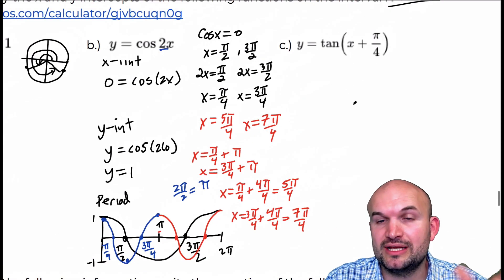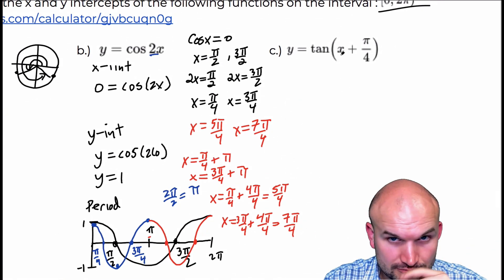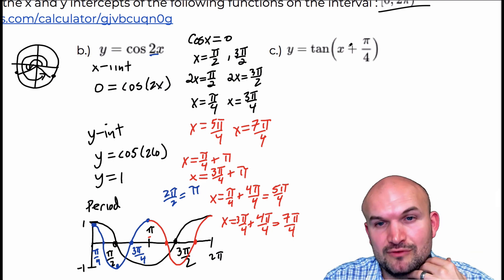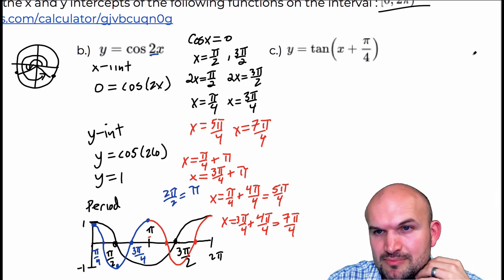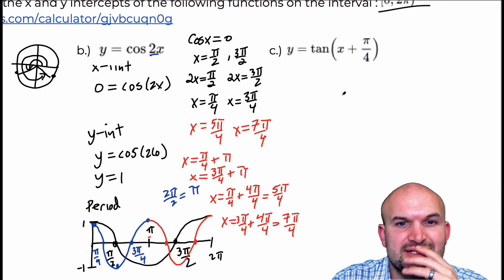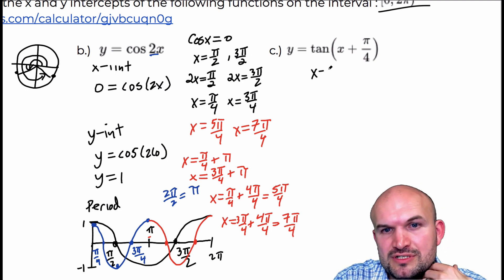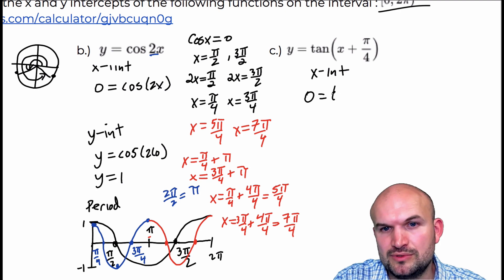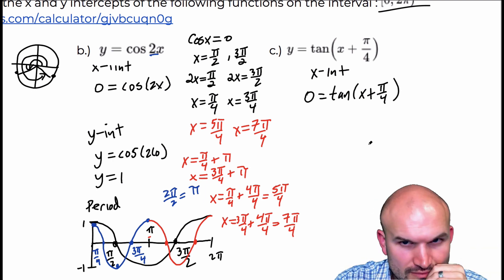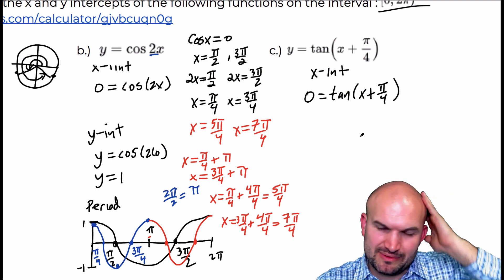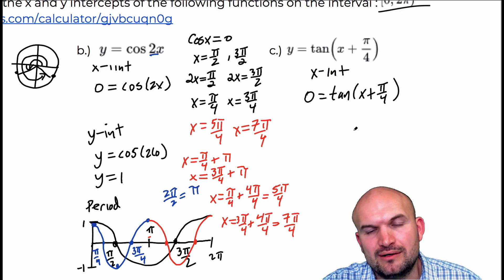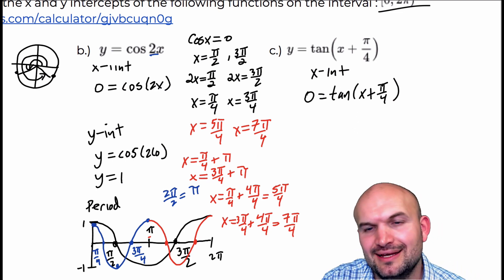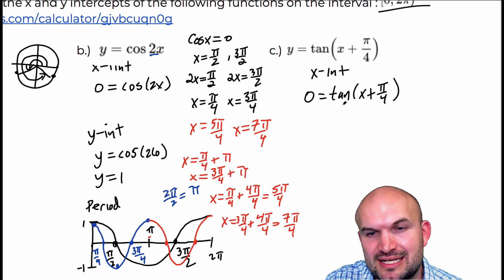So let's get into the last example: y equals tangent of (x + π/4). Let's work on the x-intercept first. The x-intercept is when y equals 0, so 0 equals the tangent of (x + π/4). This might be a little confusing — thinking about what values are going to make sense here.